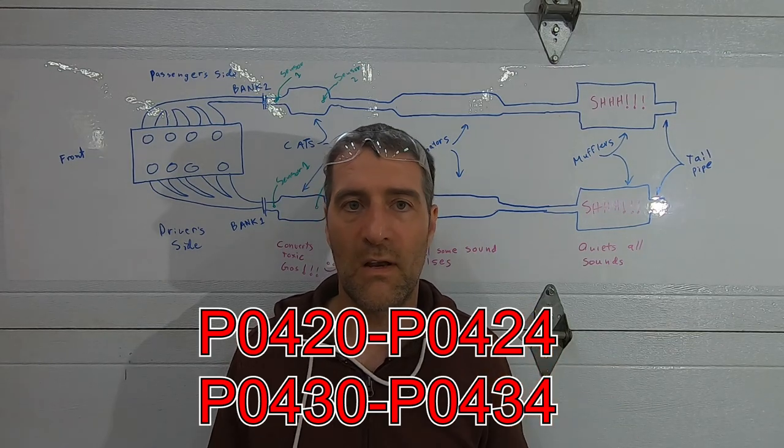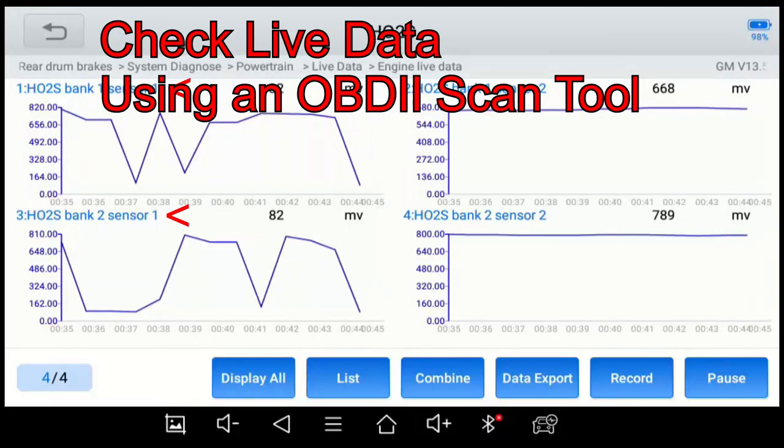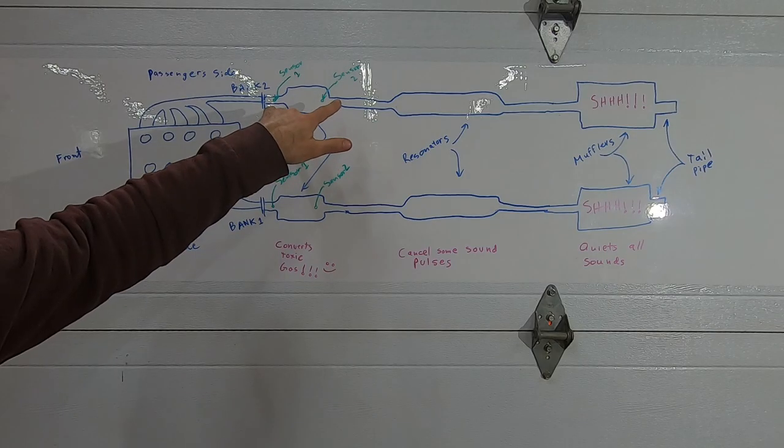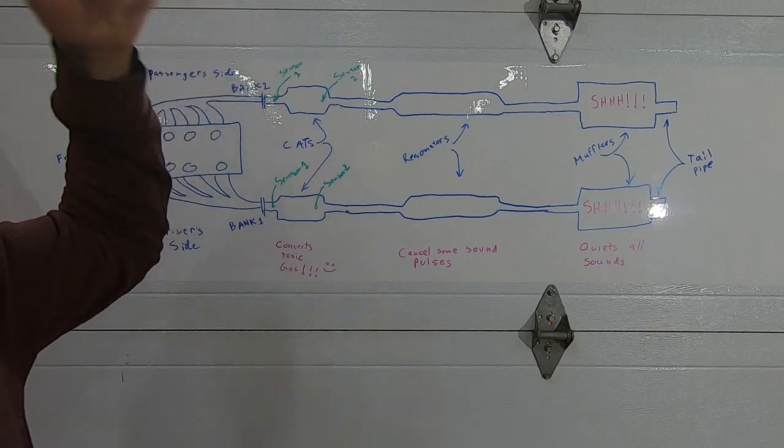You can use a scan tool to check to see if there are any codes. The upstream sensors fluctuate pretty rapidly between 100 millivolts. You can remove the cat and visually look through them.